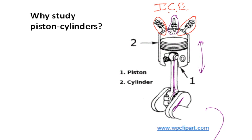In surveys of mechanical engineering students asking why they didn't pick electrical or civil engineering, the number one answer — about 25 to 30 percent — involves automobiles and engines. That's usually the top motivator for choosing mechanical engineering as a major.